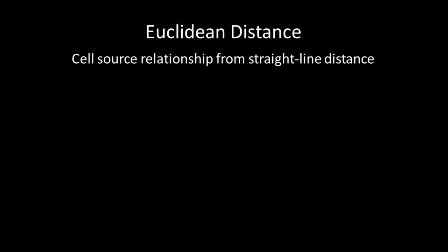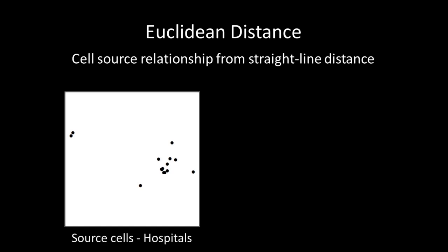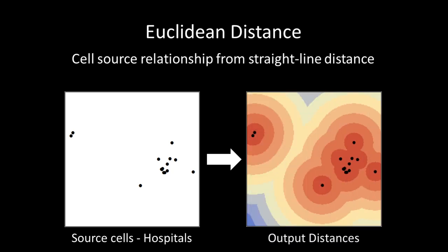Euclidean distance describes each raster cell's relationship to a source or set of sources based on the straight line, or Euclidean, distance. For example, if you need to know the distance between hospitals for planning a disaster evacuation, source cells representing hospital locations can be used. After Euclidean distance is run, an output raster is created showing distances between the source cells, which could be helpful for planning which hospitals injured people should be sent to.